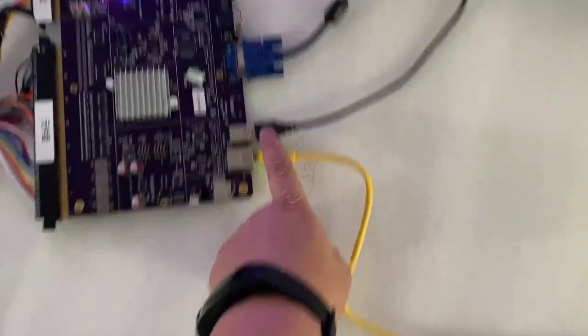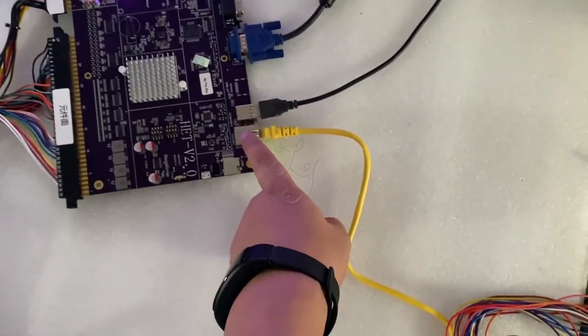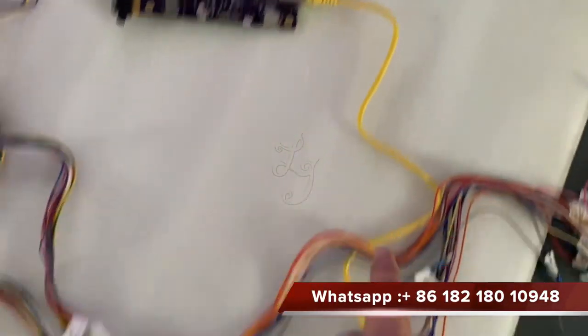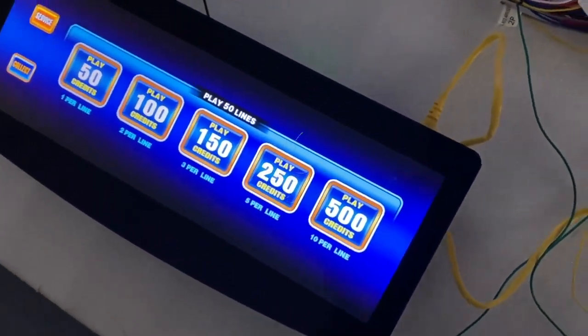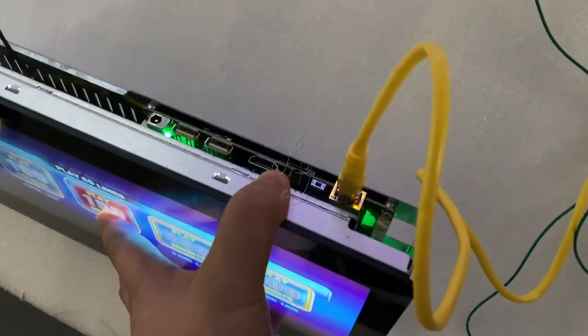This is for the touch USB cable. This is for the internet cable. The internet cable goes to here, of the i-deck. Okay, just here.